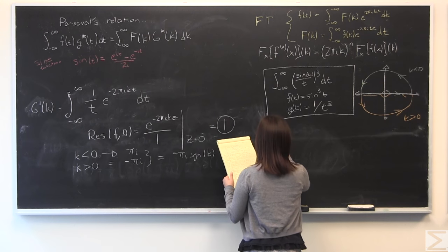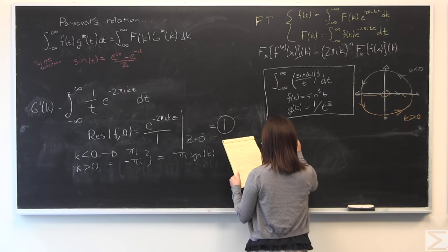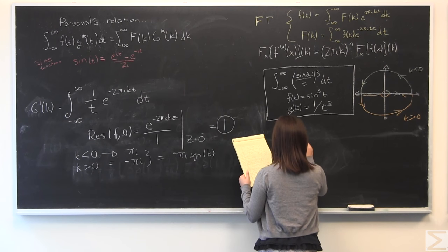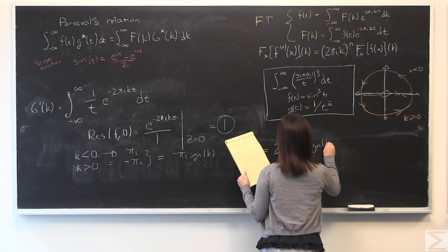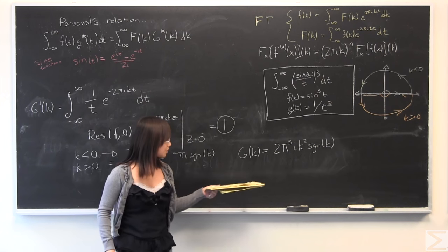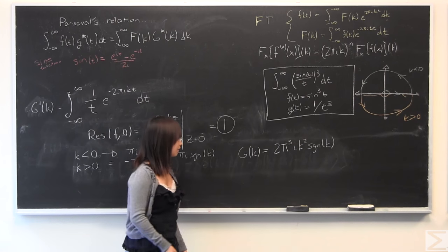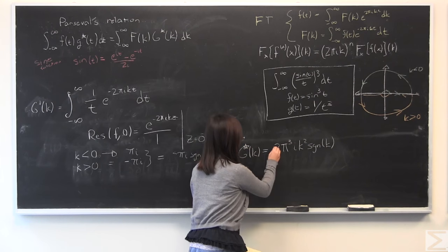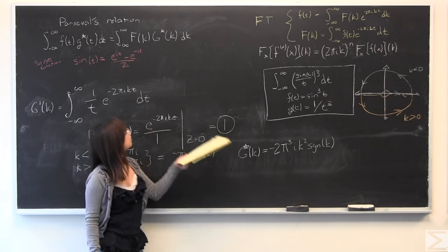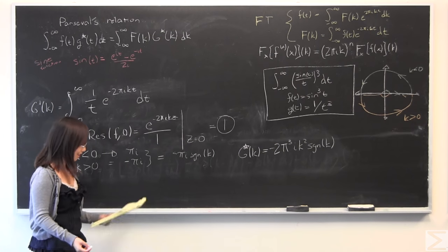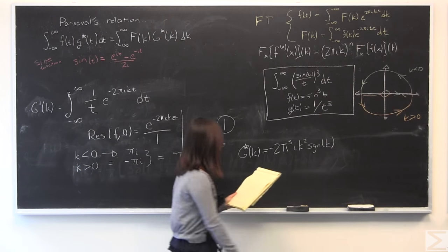I am going to go ahead and do the entire thing out. So, interestingly enough, 2π³ i k² signum k, very simply, complex conjugate, make a negative, and that's all we need. We have all the pieces we need for this part, and everything flows along pretty smoothly from there.